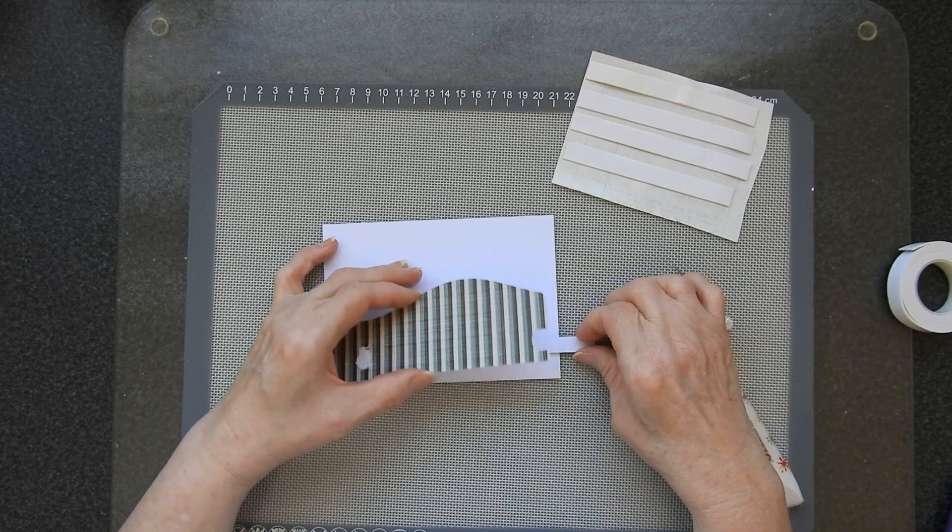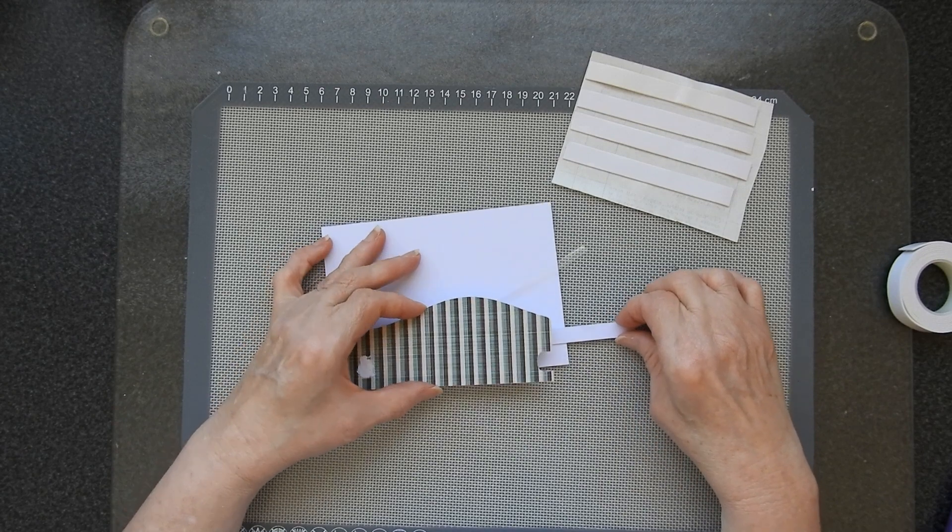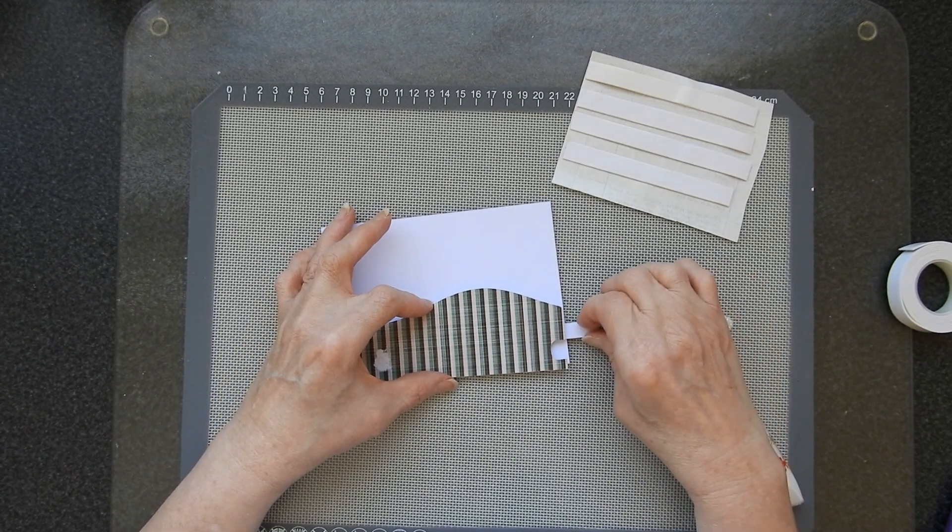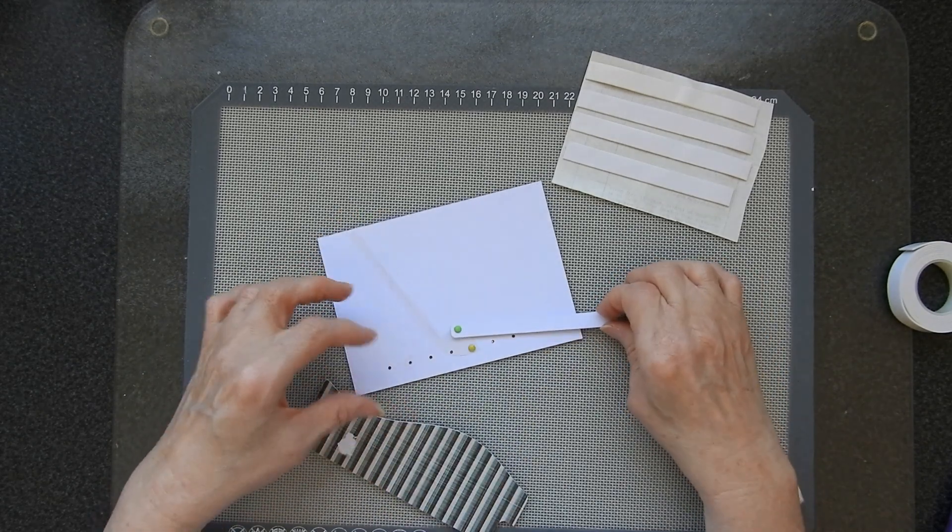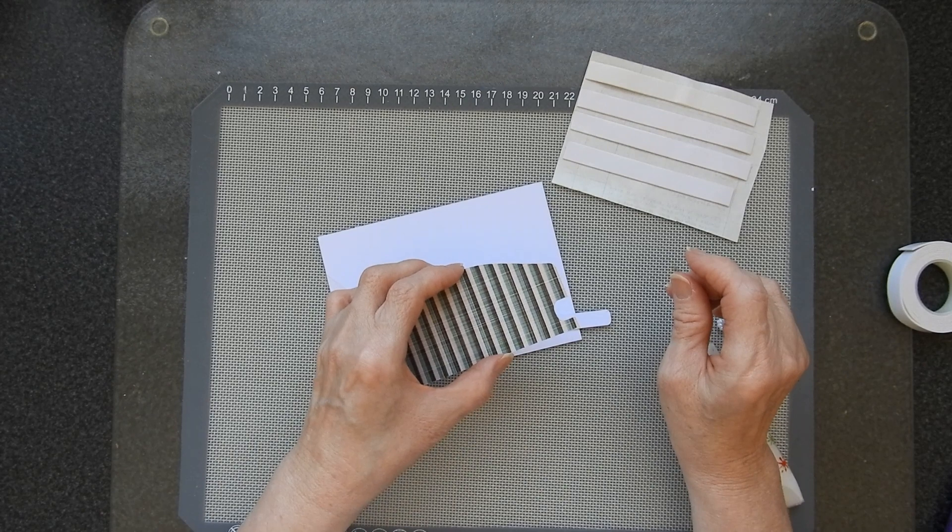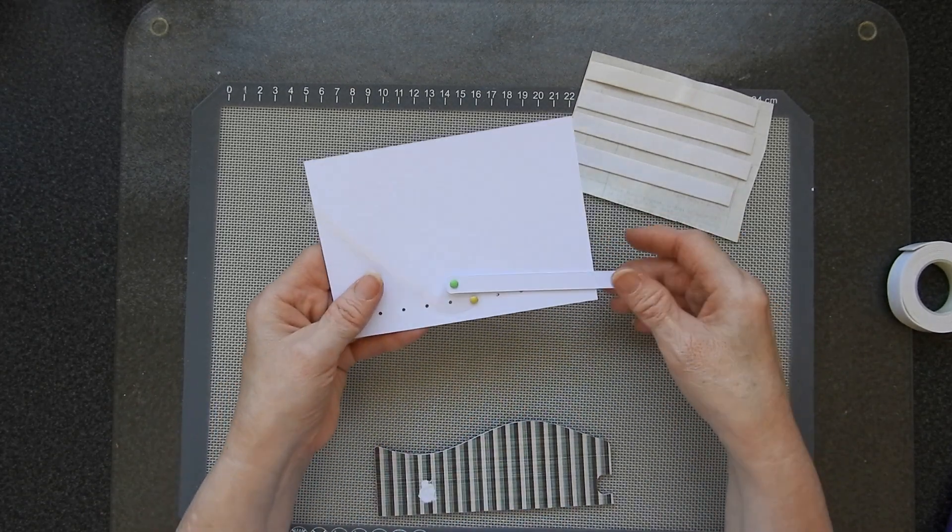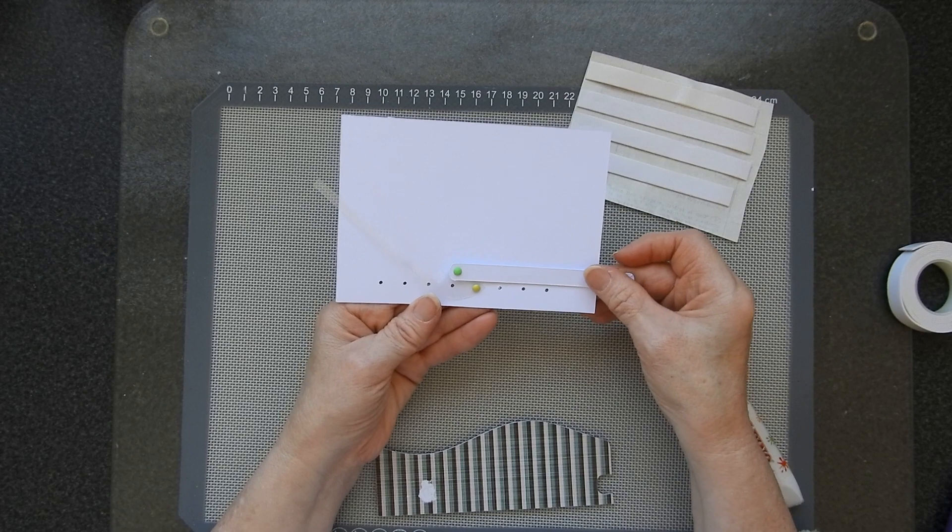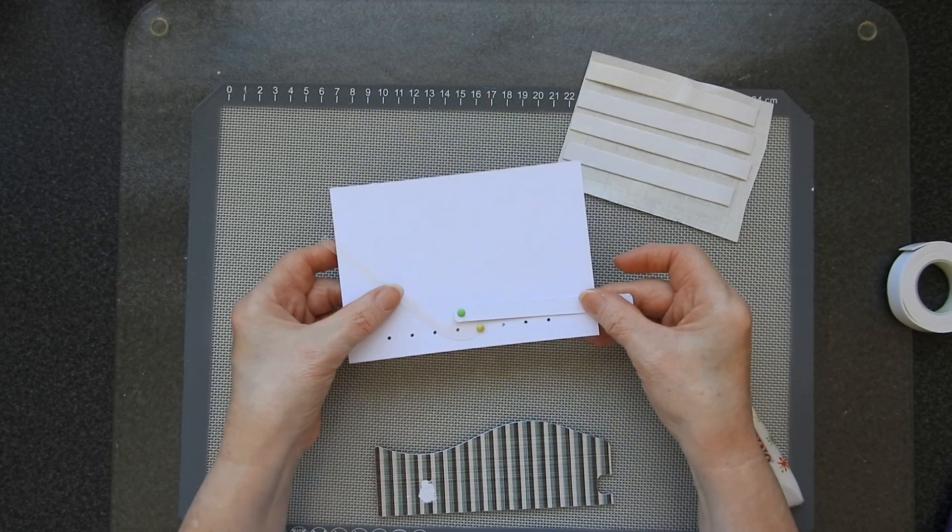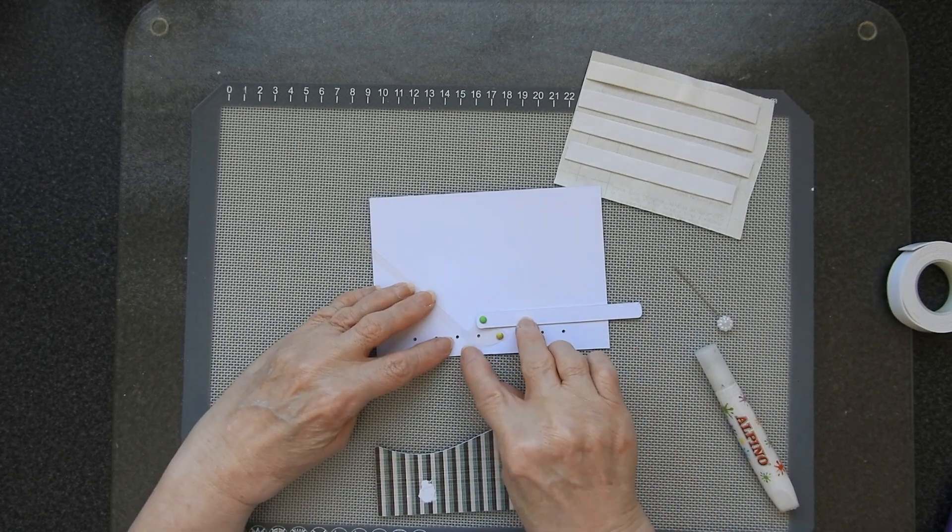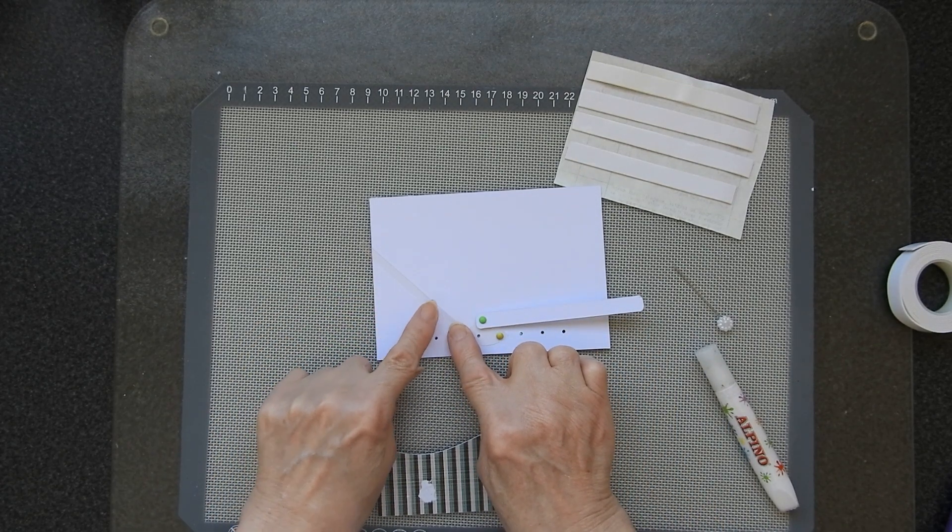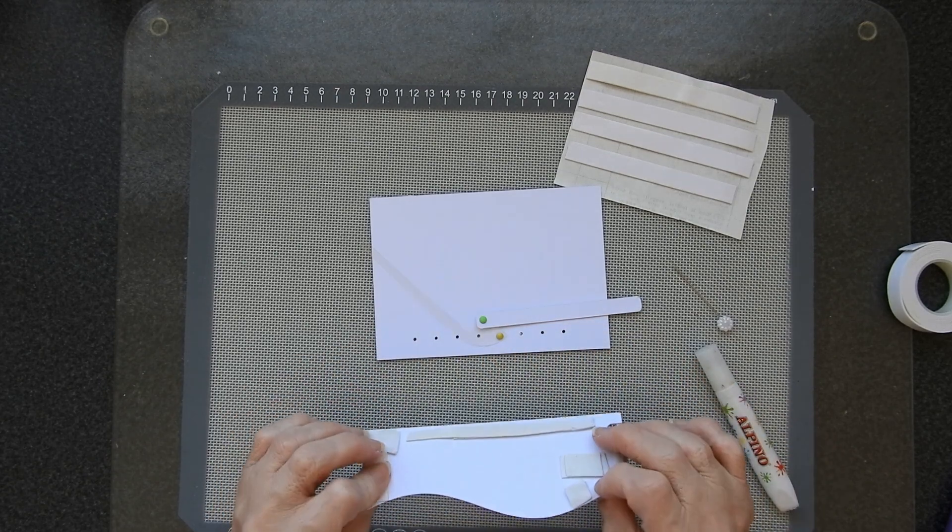So that one is slightly in the wrong place I think. Yeah never mind. I can always cover it up with something else. There are usually ways of getting around this. Okay so I don't want this to go down too low so I would want to put a little bit of foam or something there to make sure it didn't go any further down.